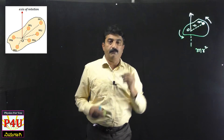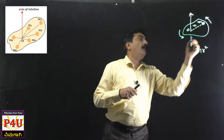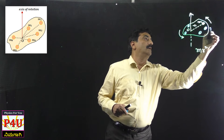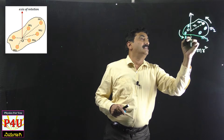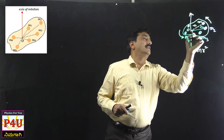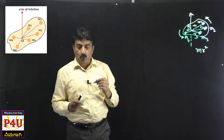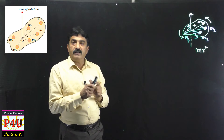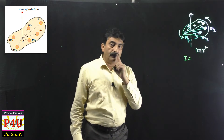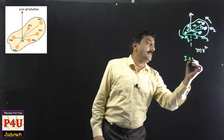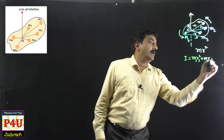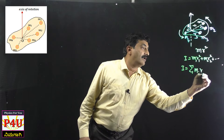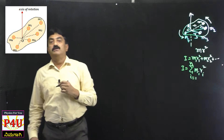This is the Moment of Inertia of the individual particle. If we consider multiple particles — say mass M2 at distance R2, mass M3 at R3, mass M4 at R4, R5 and so on — covering the entire rigid body, then the Moment of Inertia is the sum of individual moments: I = M1R1² + M2R2² + ... That is, I = Σ MᵢRᵢ², where the summation is from i = 1 to N.